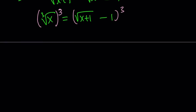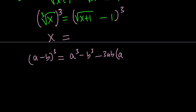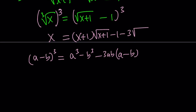If you cube both sides, you're going to have the cube of a difference — x on the left-hand side, and a minus b cubed on the right. I use the identity: a minus b cubed equals a cubed minus b cubed minus 3ab times a minus b. If you cube square root of x plus 1, that gives you x plus 1 times square root of x plus 1. Then minus 1, minus 3 times square root of x plus 1 multiplied by square root of x plus 1 minus 1.